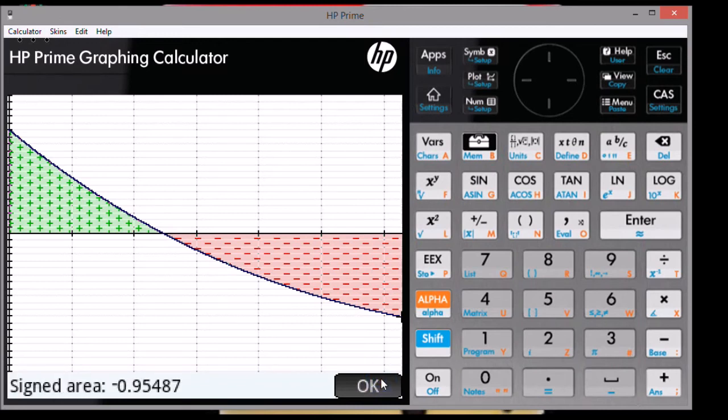Note that in a signed area calculation, the integral, anything that is above the x axis is going to be shaded green and that's going to be a positive area. Anything that is below the x axis is going to be shaded red and that's going to indicate a negative area.